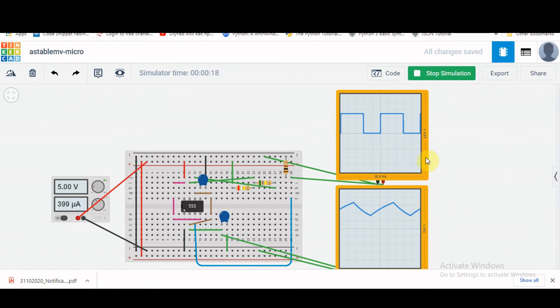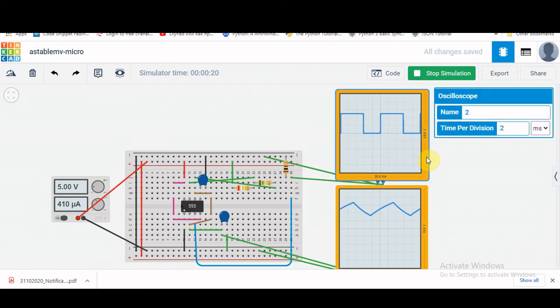Now if we want to measure the on and off time, if we click on this scope, we see that the time per division is 2 milliseconds.